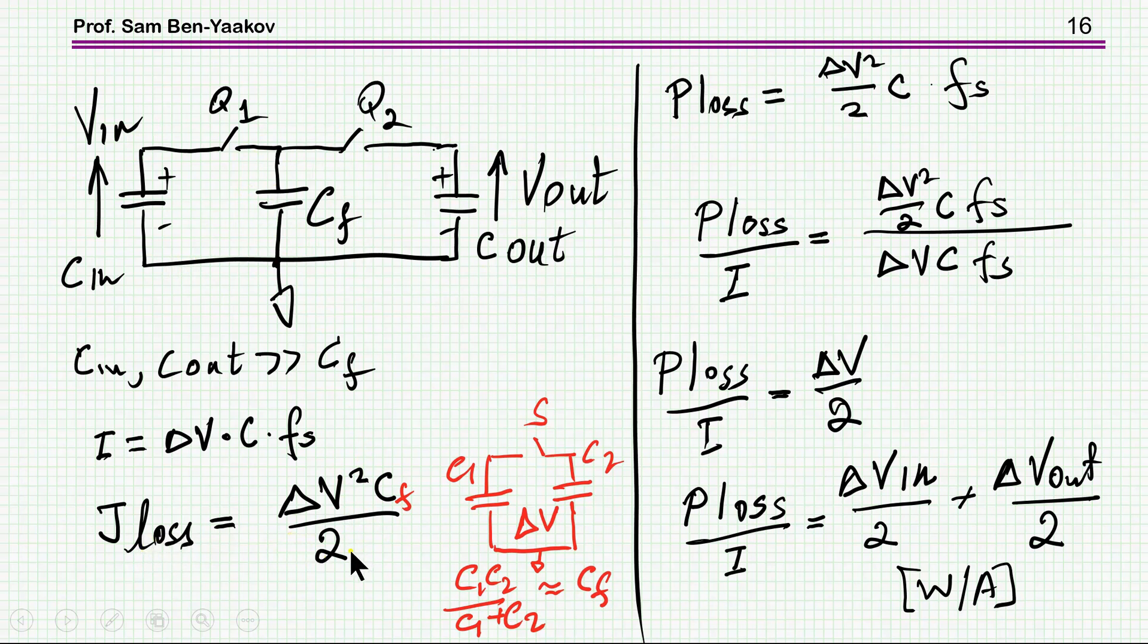Now, the power loss is times the frequency. So I can now define a figure of merit, you might call it, power loss over current. This is the power loss, this is from here, and this is the current, here is the current from here. Lo and behold, this is a nice result, delta V over 2. So whatever you do, this is the loss, independent of the capacitor. Very interesting.